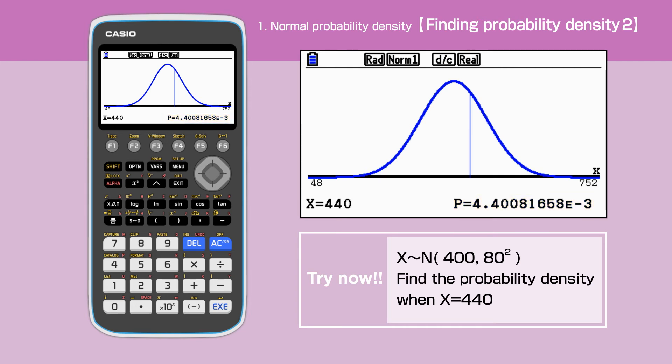We can also find the probability density with a different value for x keeping the same mean and standard deviation. Let's find the probability density when the value of x is 480.